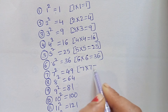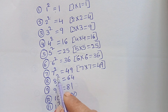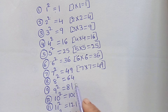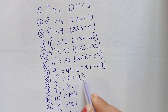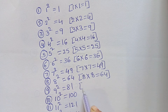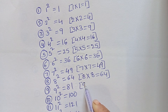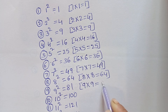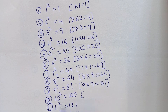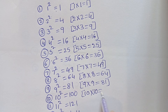Seven into seven equals to forty-nine. Eight square equals to sixty-four. Eight into eight equals to sixty-four. Nine square equals to eighty-one. Nine into nine equals to eighty-one. Ten square equals to hundred. Ten into ten equals to hundred.